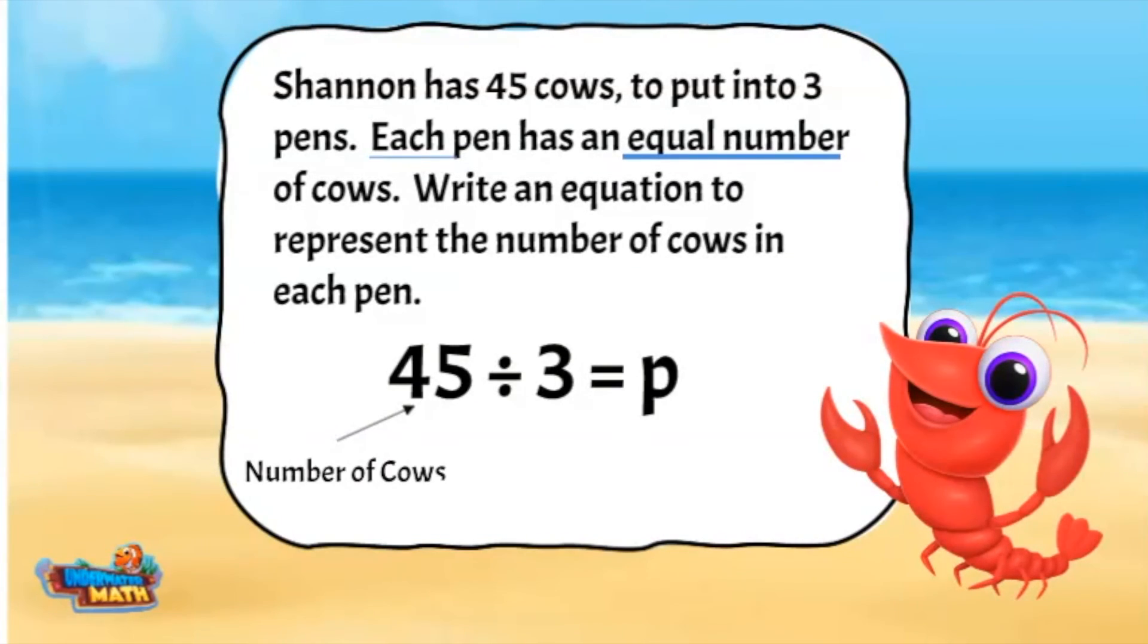The 45 represents the number of cows divided into the number of pens. This will give us the variable P, which represents the number of cows per pen, 15.